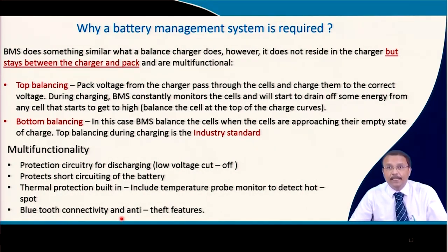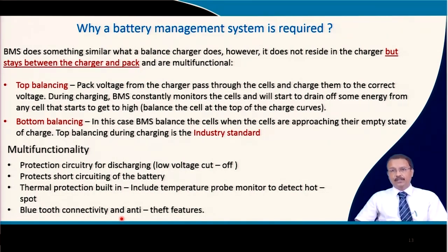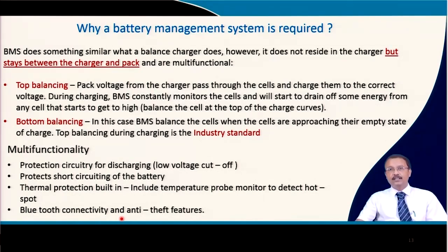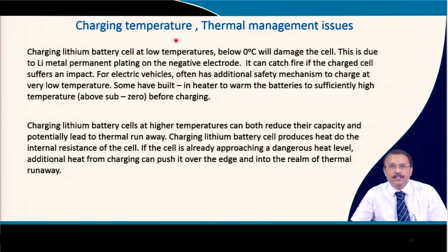BMS also provides Bluetooth connectivity and a data logger, so all electrochemical characteristics — voltage, state of charge, state of health, internal temperature — can be displayed and logged for remote monitoring. Additionally, it can have an anti-theft feature: even if the battery is removed, it will not discharge or charge unless it receives an authorization signal. Incorporating all these facilities makes the BMS more expensive.